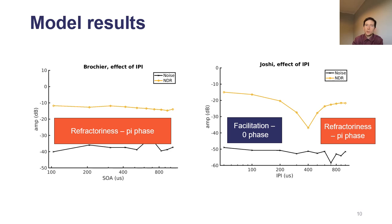This is why we see this beating pattern in the Joshi et al. model, because there's this shift in phase by pi between the two mechanisms. We have preliminary data that we're collecting now that suggests that in CI users, the phase of the NDR is a bit better aligned with a refractoriness-based mechanism.